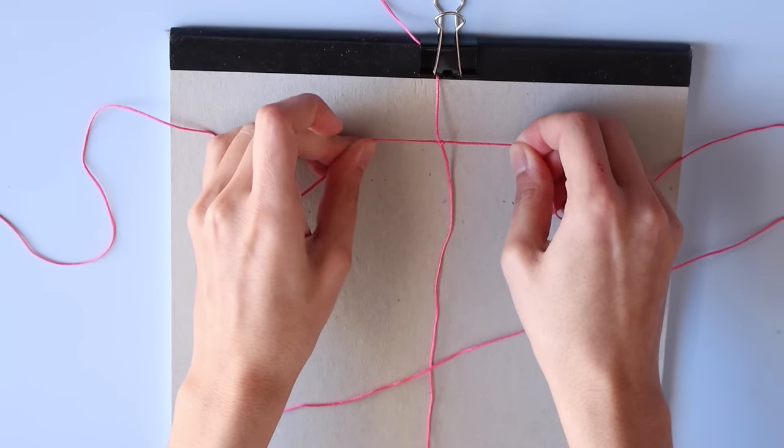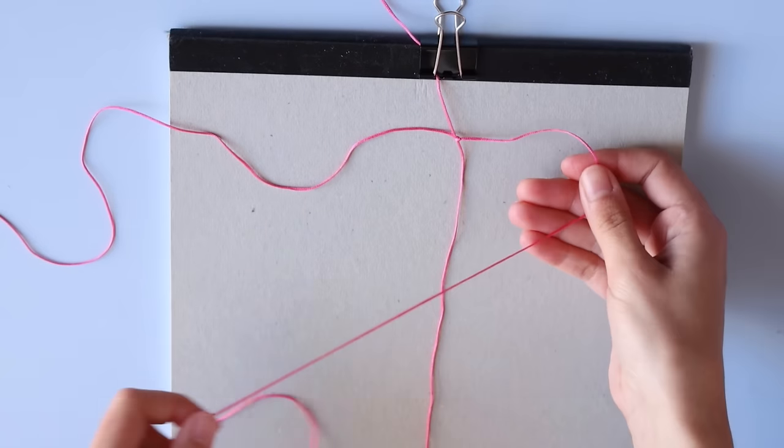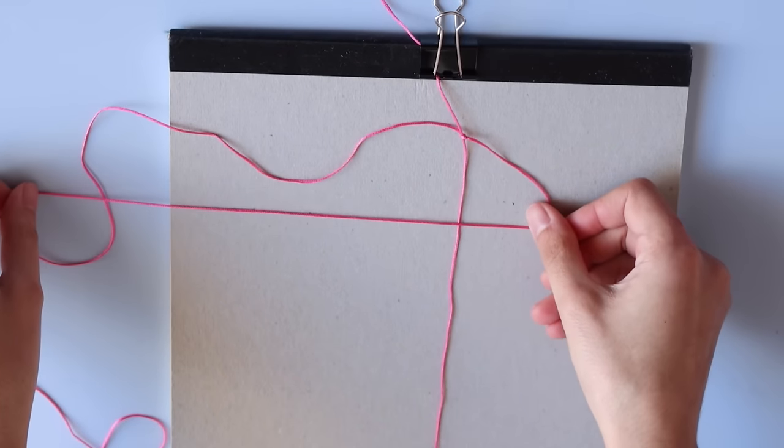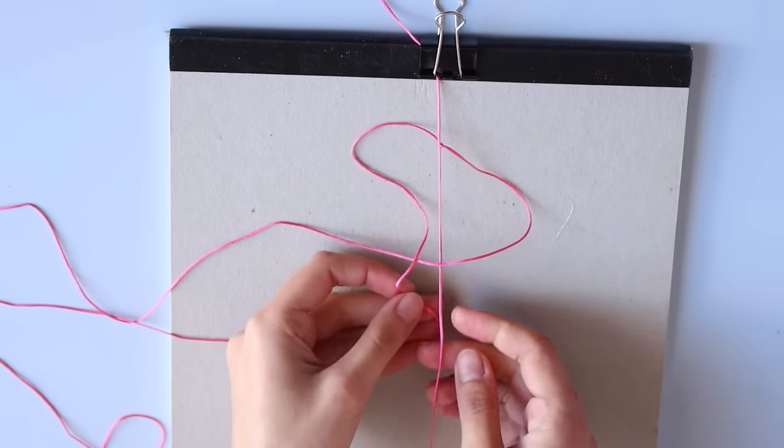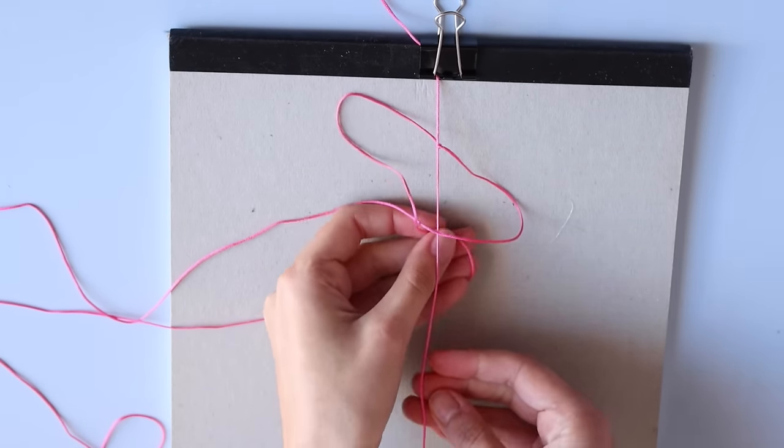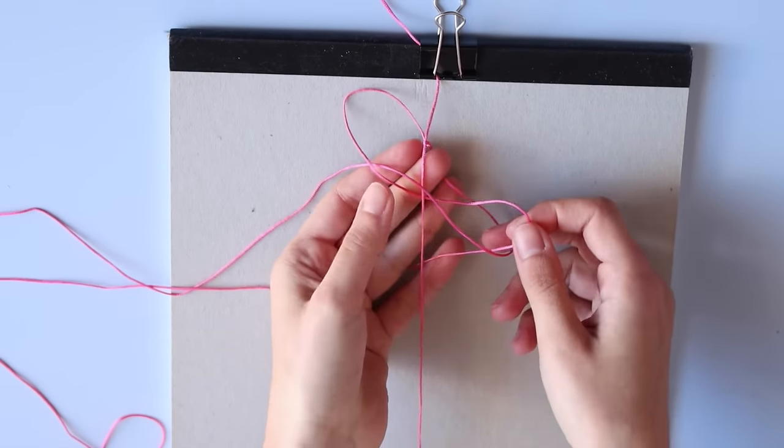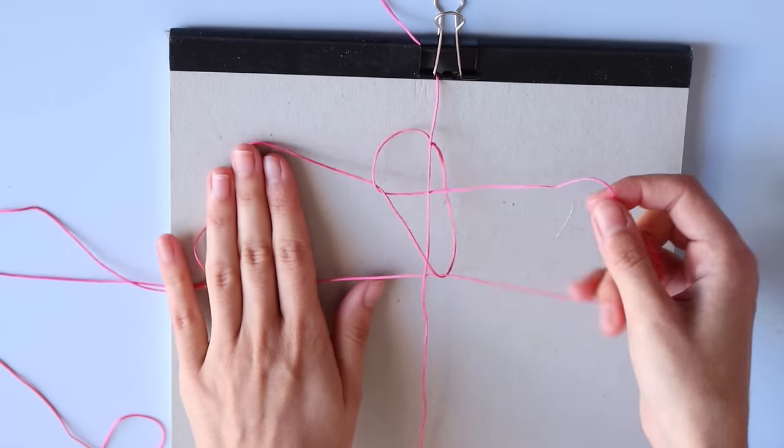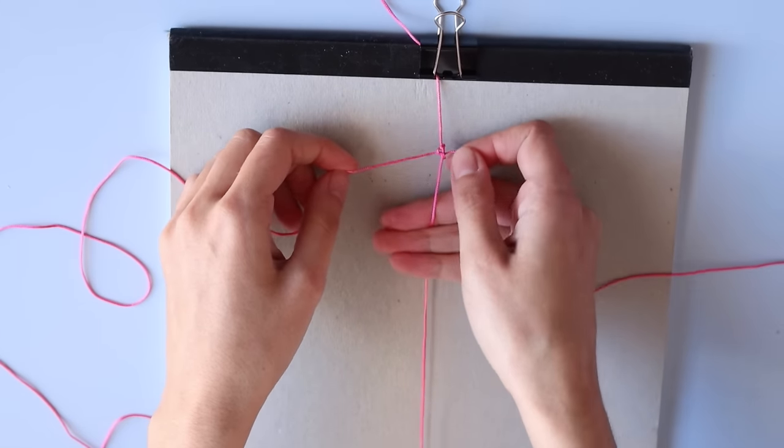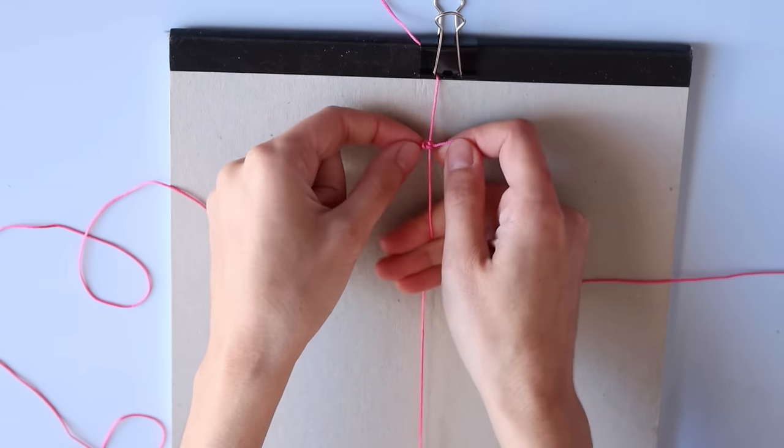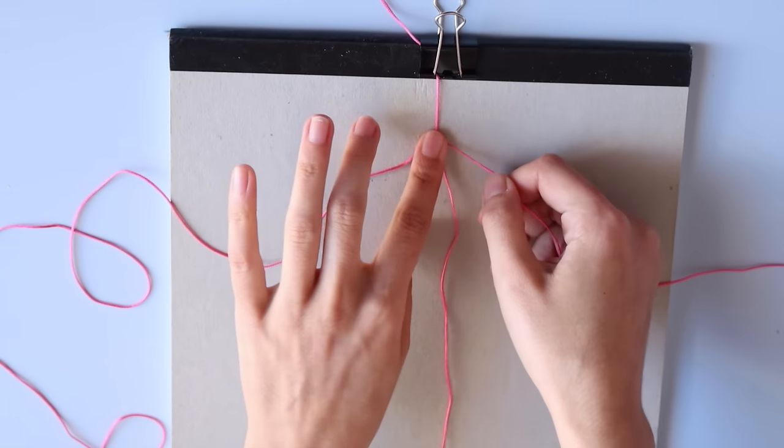Same thing on the other side, cross the right cord over the one in the center, bring the left one over it and then under the other two, into the loop. Then tighten it as well. Now you have a complete square knot. You just have to repeat that until you have a full bracelet.